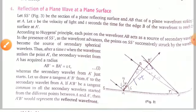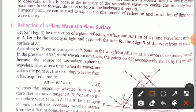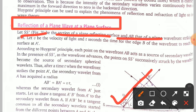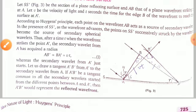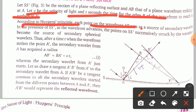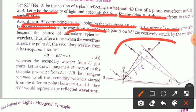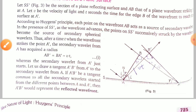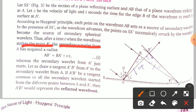Now, reflection of a plane wave at a plane surface. Let SS' be the section of the plane reflecting surface, and AB be the plane wavefront striking it. Let v be the velocity of light and t seconds be the time for the edge B of the wavefront to reach the surface at A'. According to Huygens' principle, each point of wavefront AB acts as a new source of secondary wavelets. After time t when the wavefront strikes A', the secondary wavelets from A have acquired a radius AB' = BA' = vt.